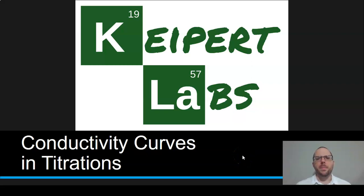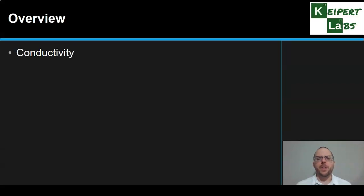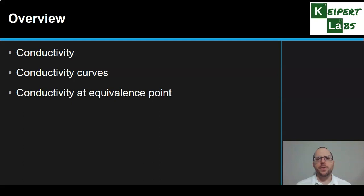Hi everyone, welcome to this episode of Kuypert Labs. In today's episode we're going to talk about conductivity curves in titrations. We're going to start by looking at the concept of conductivity, then think about how we can draw or construct a conductivity curve, look at conductivity at the equivalence point, and then explore the different types of conductivity curves depending on what type of acid and base we are reacting together.